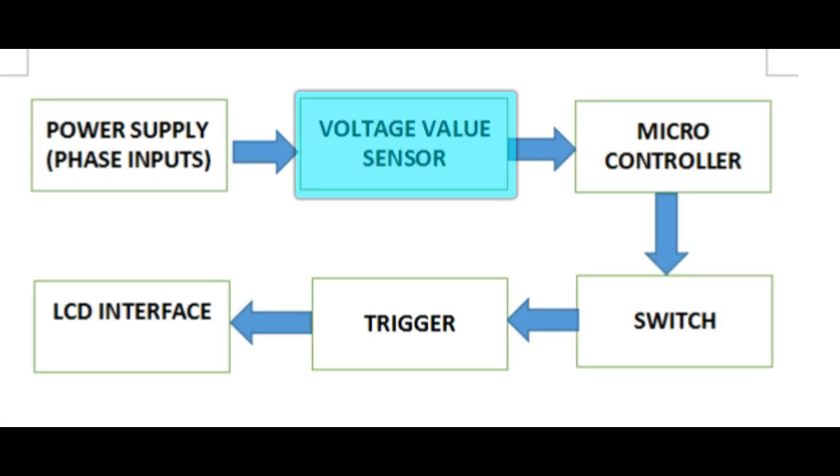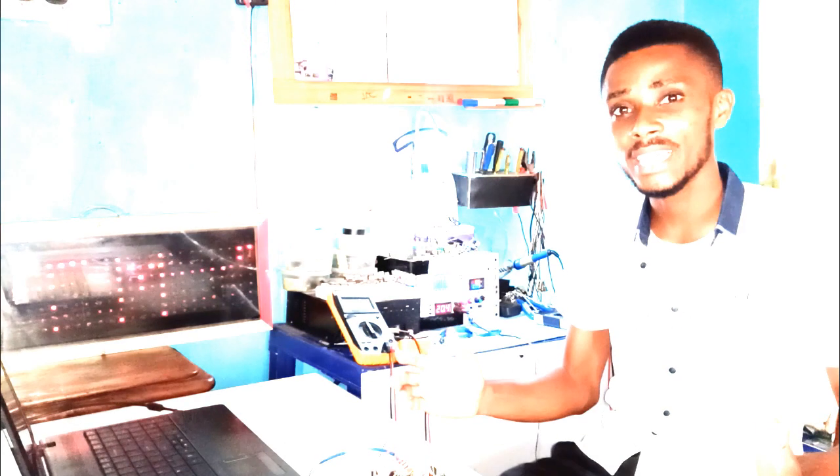The next block diagram is the voltage value sensor. In reading the input phase AC voltage from the Arduino board, we don't need to practically connect the AC source into the Arduino board as it will blow and damage the Arduino board and probably many other things which will include you.